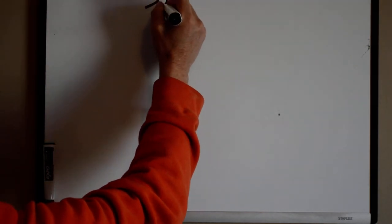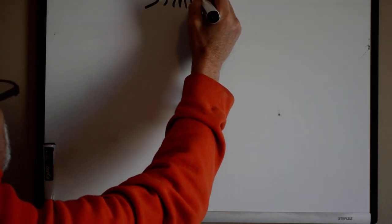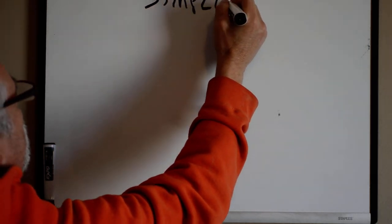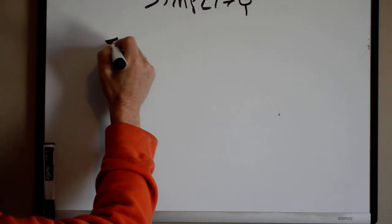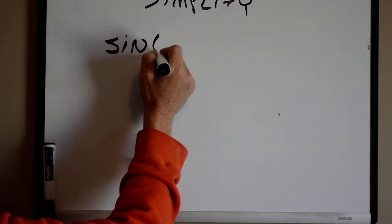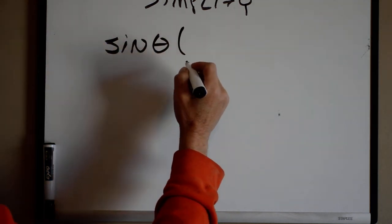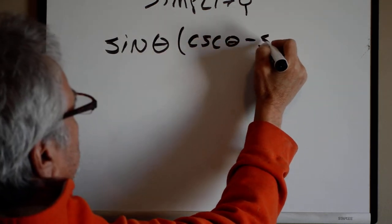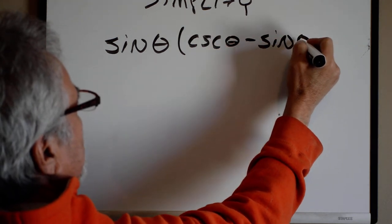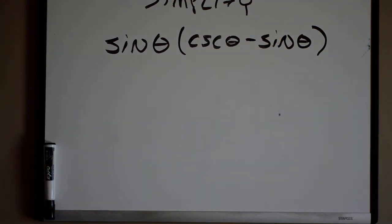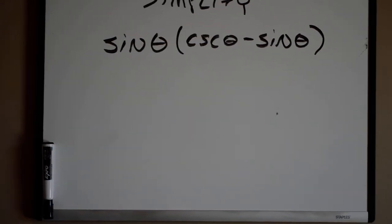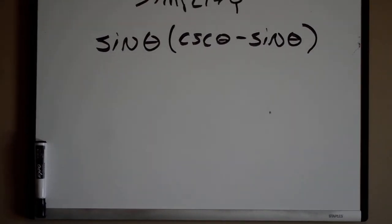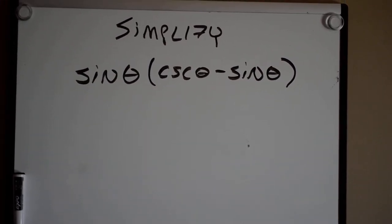I want to simplify the sine of theta times cosecant of theta minus the sine of theta. I want to simplify as much as possible. So again, we are going to try to put everything in terms of sine and cosine. That's as far as it's going to go.